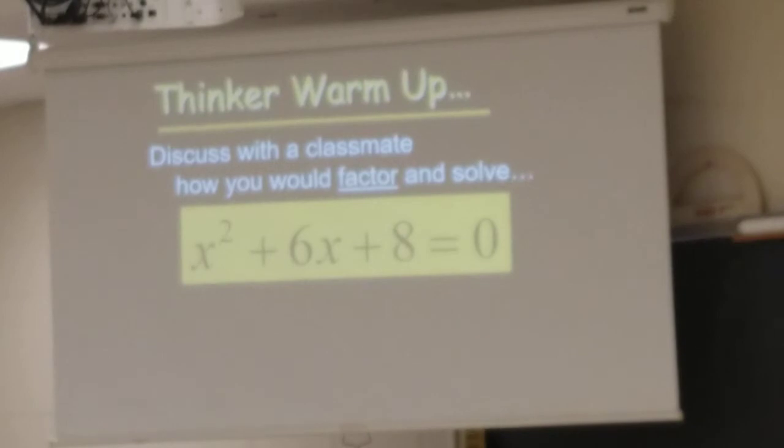This is a trinomial. That's mathy talk. But a trinomial is when you have like three terms. And the first term is squared. The second term is not, we call that linear. And then we have a constant.